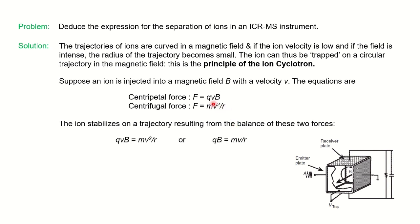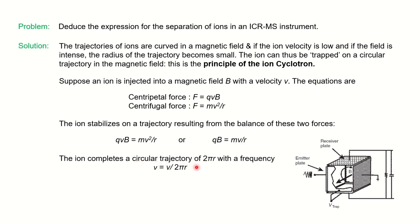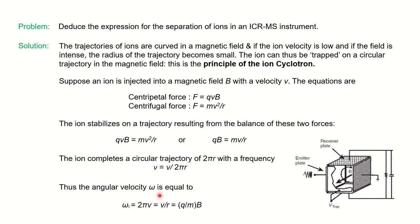Equalizing the two forces: qvB = mv²/r. Cancelling v, we get qB = mv/r. The ion completes a circular trajectory of 2πr with frequency ν = v/(2πr). The angular velocity ω = v/r, and since ω = 2πν, substituting the frequency value ν = v/(2πr) gives ω = v/r.